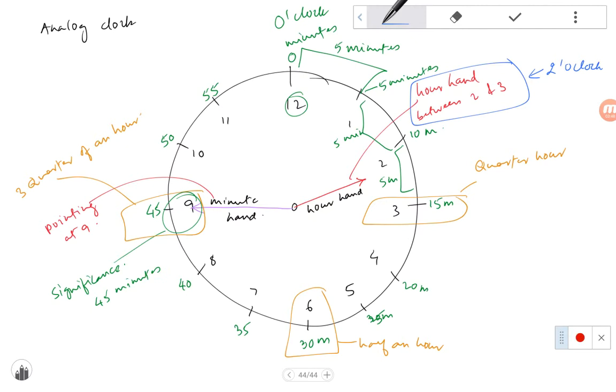And then we also have forty-five minutes from here. So this becomes 2:45. So the time on the analog clock right now is 2:45.